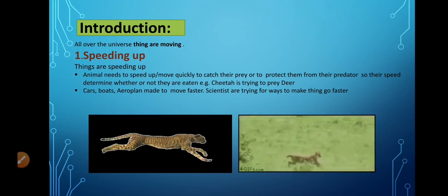They want to catch their prey or to protect them from their predator. For example, if you notice one animal is a predator and the other one is prey. So cheetah is trying to prey the deer. Cheetah is speeding up to catch its prey and deer wants to save from the cheetah. So deer is also speeding up.